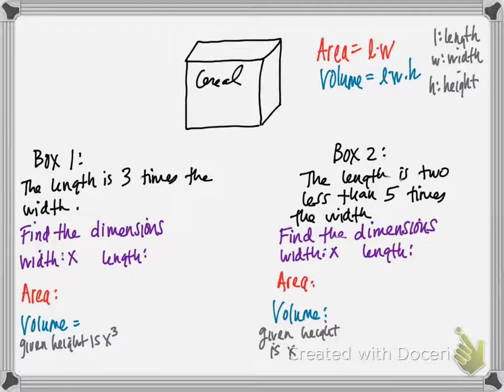In this example, we are going to be finding the dimensions of two different cereal boxes, the area and the volume. So the first cereal box says the length is 3 times the width.